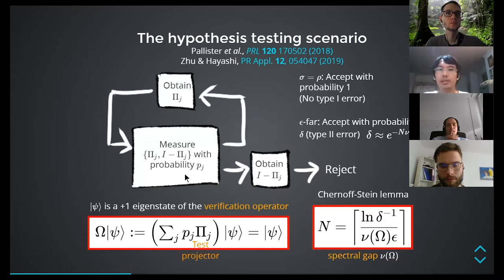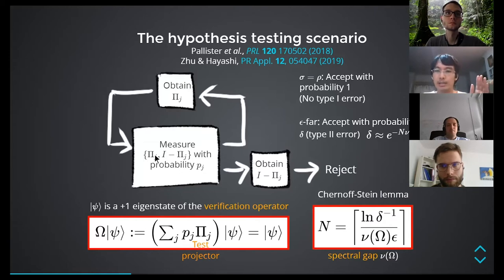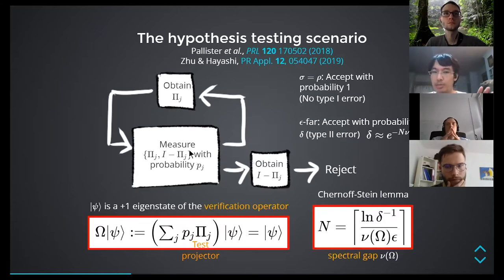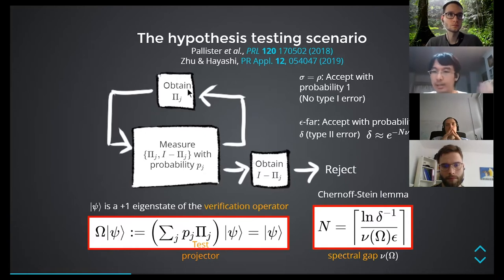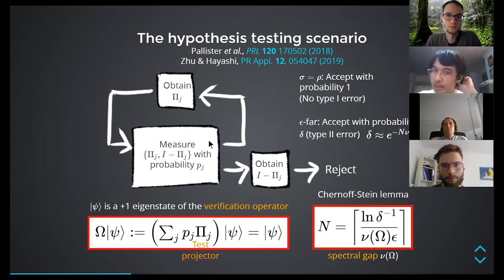The common hypothesis testing scenario adopted in quantum verification is: you have a projector onto the target state as the plus-one eigenstate, and its complement, so every measurement is a two-outcome measurement. Each measurement indexed j is associated with some probability — you roll a dice and choose a measurement from your set. If you obtain the correct answer — that the state produces the same result as your target state — you keep measuring again and again and stop whenever you obtain the negative result.